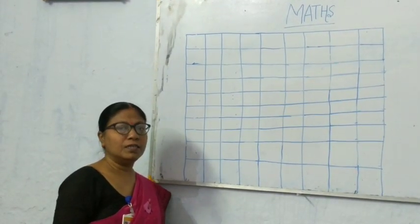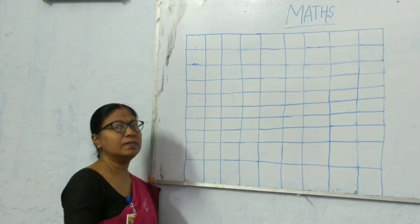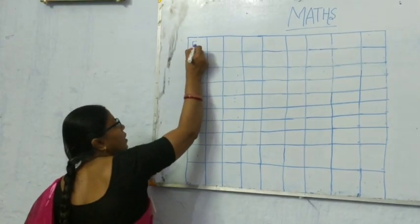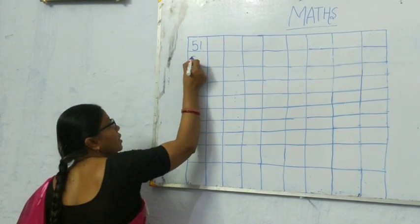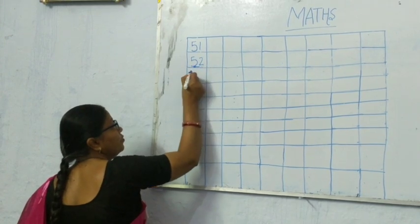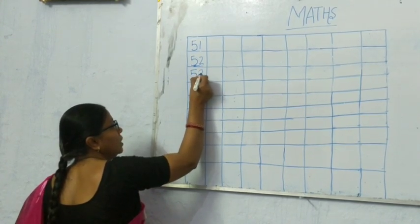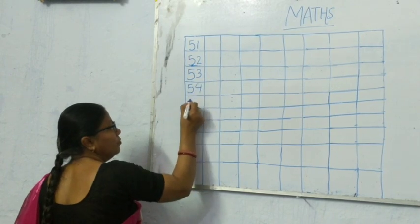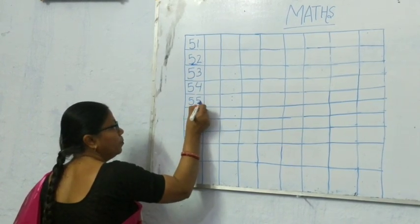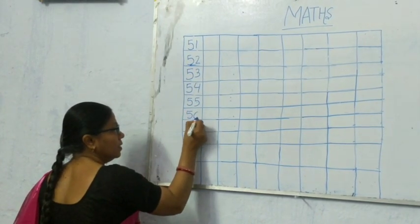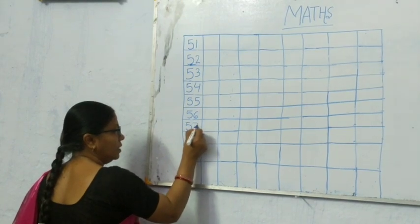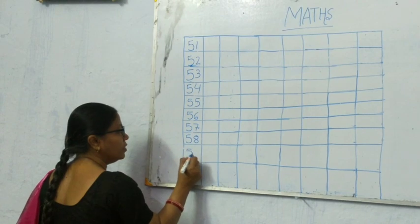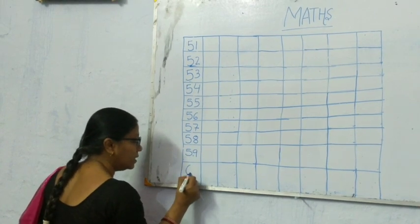Now turn the page of your copy and start writing from 50. 51, 52, 53, 54, 55, 56, 57, 58, 59, 60.